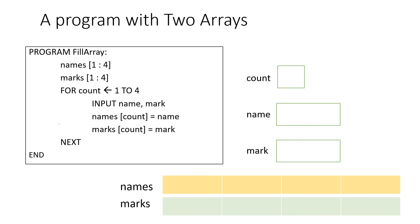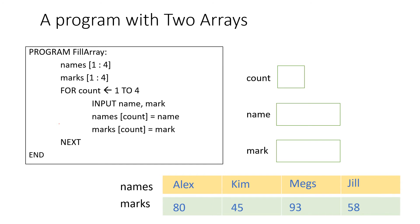We've got our counter, the name variable, the mark variable, and then the names and marks arrays. At count = 1, we'd input a name — 'Alex' — and a mark — 80. Then names[count] = name, so Alex goes into cell 1 of the names array, and marks[count] = mark, so 80 goes into cell 1 of the marks array. We carry on the same way until both arrays are filled.